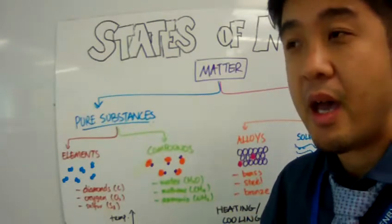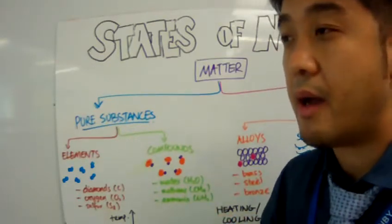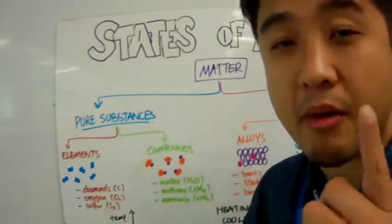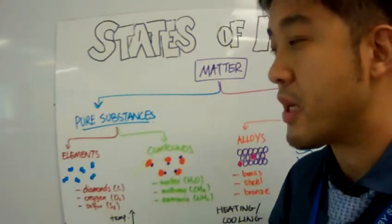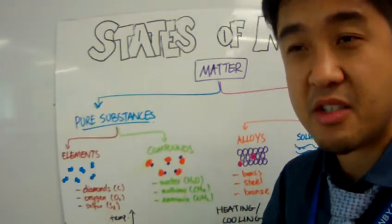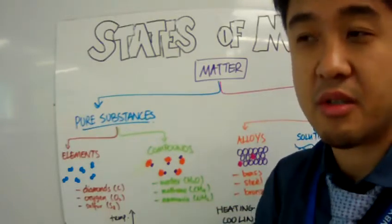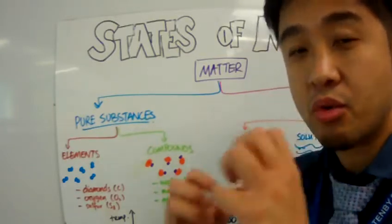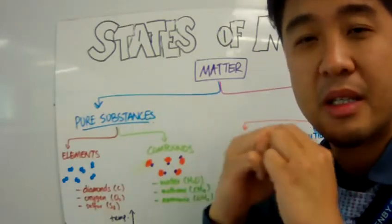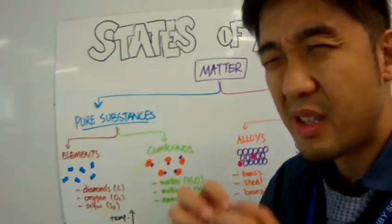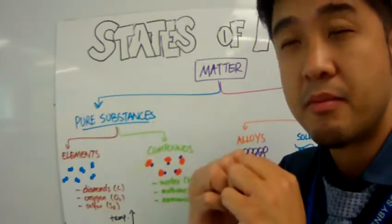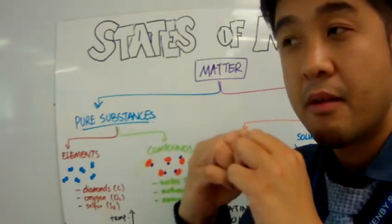Let's talk about elements. Elements are molecules that have only one type of atom. For example, we have oxygen gas. Oxygen is an element with two oxygen atoms combined together to form a diatomic molecule. This diatomic molecule means that it's two atoms of the same kind forming that element.